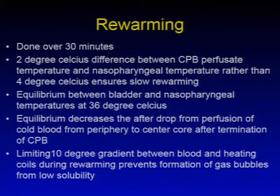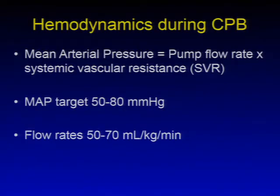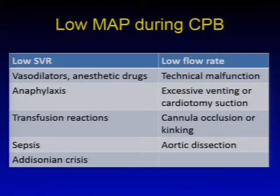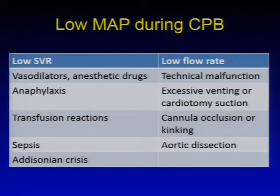During CPB, mean arterial blood pressure equals pump flow rate multiplied by systemic vascular resistance. MAP targets are 50–80 mmHg, with flow rates of 50–70 ml/kg/min typically required. Low MAP during CPB is related to low SVR, which can result from vasodilators, anesthetic drugs, anaphylactic shock, transfusion reactions, sepsis, or rarely Addisonian crisis.